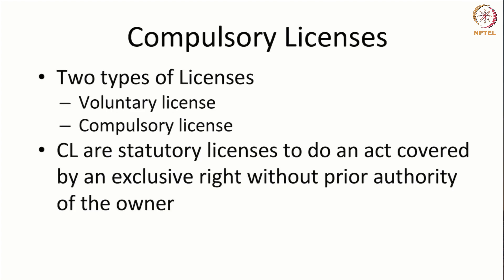There are two types of licenses broadly. Compulsory licenses are forced licenses — licenses which are granted by the government. Voluntary licenses are licenses that the IP holder, the owner of the IP, would voluntarily grant in lieu of a license fee.